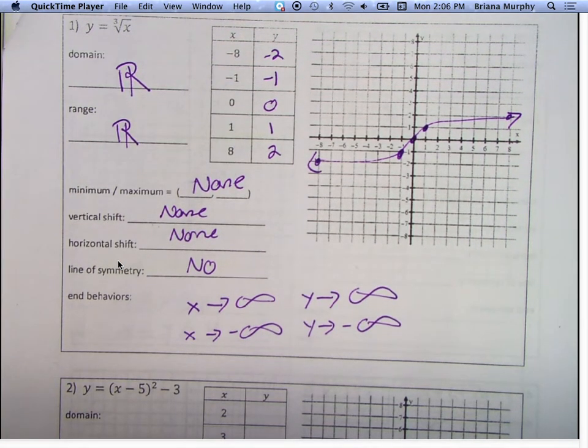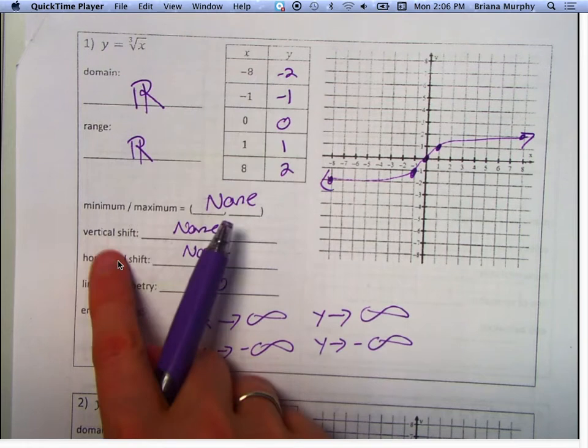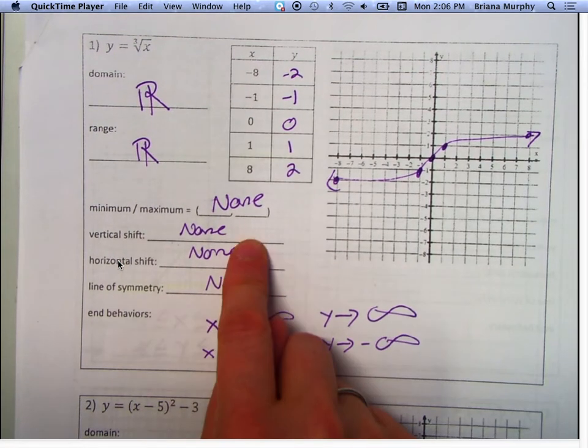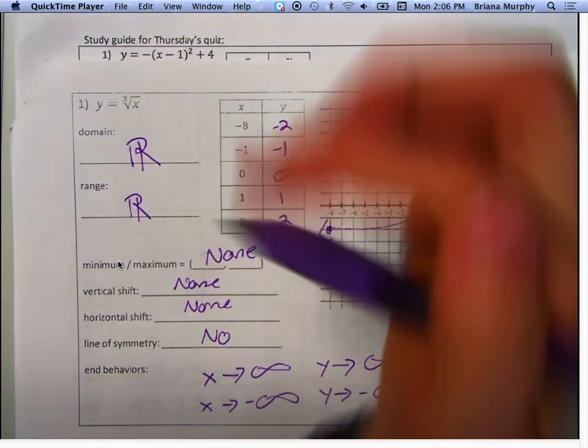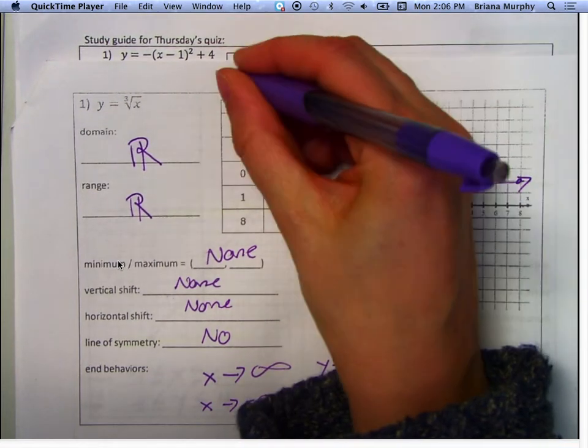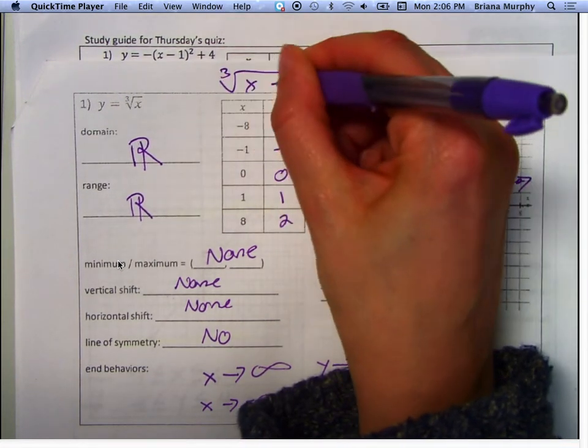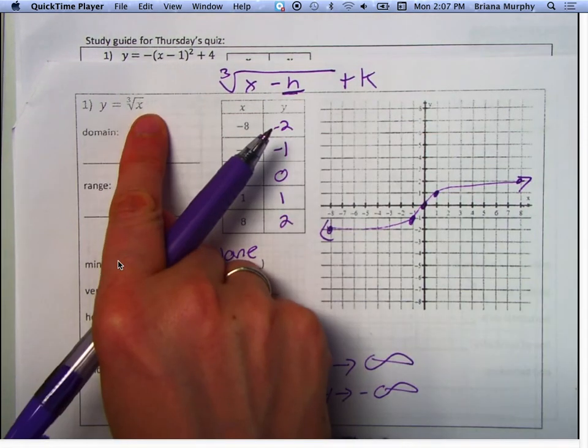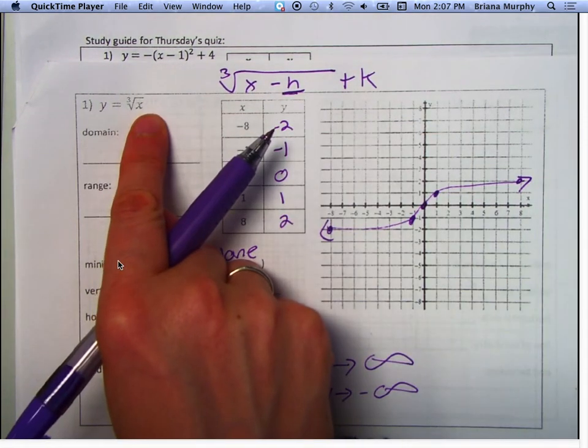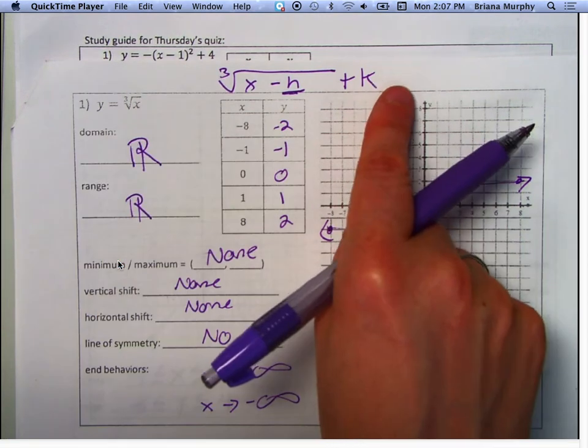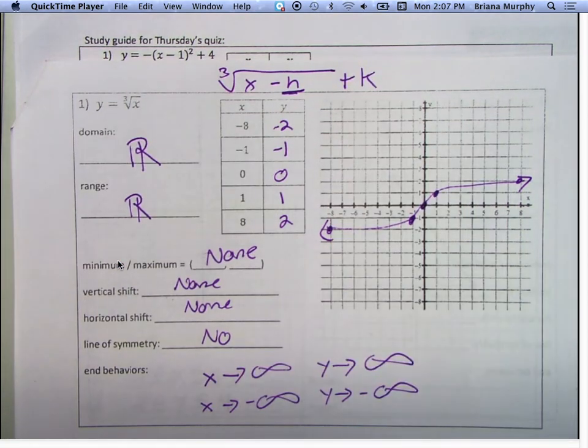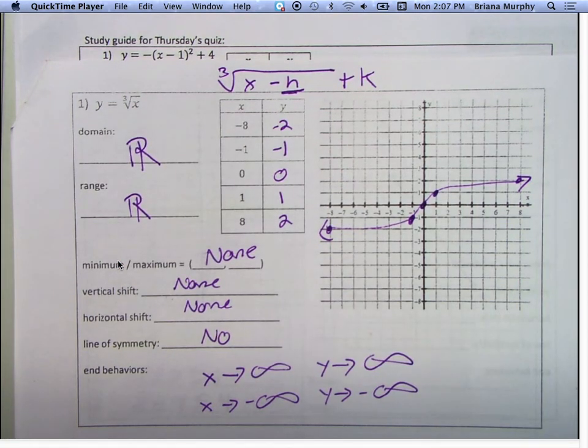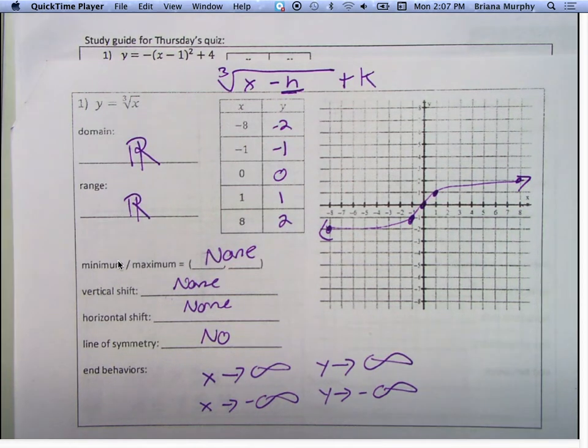Okay. So how did I know, if I wasn't looking at the graph, how did I know there was no vertical shifts? We remember, right, that they go under here. Right? Something underneath the cube root changes it to go right to left. Outside the cube root makes it go up or down. Yes? Or you could say it's the parent function. It is the parent function. Yeah.